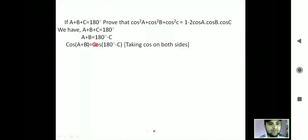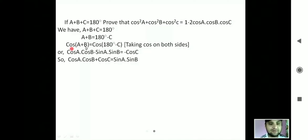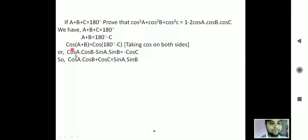We have taken cos on the left side and the right side. On the left hand side we apply the formula of cos(a + b), and we know that cos(180° minus c) is minus cos(c). So applying the formula gives us cos(a)cos(b) minus sin(a)sin(b) equals minus cos(c).